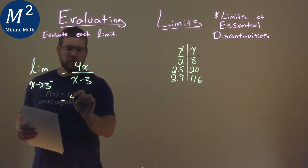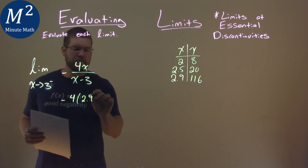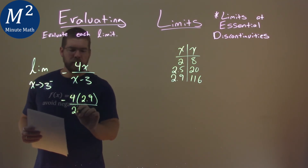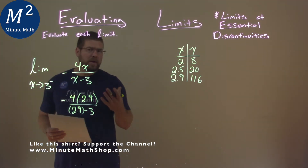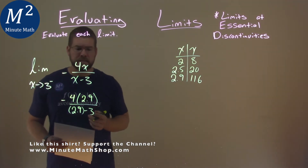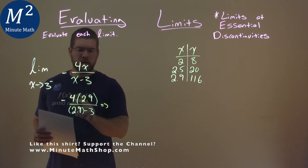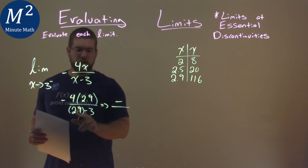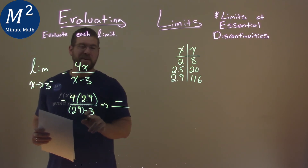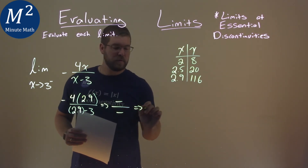So we have a negative, and we have 4, and I'm going to pick a value just to the left of 3 — say 2.9 — over 2.9 minus 3. Now I don't actually care what the exact value is; really I'm looking for whether it's positive or negative. The numerator: positive times a positive is a positive, and we have a negative up there, so the numerator is negative. The denominator: 2.9 minus 3 is a negative number. A negative divided by a negative is a positive.